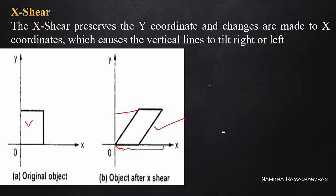So here we will see: x-dash equals x plus the shear factor along the x-axis into y. That is, x' = x + Shx · y. And y-dash is equal to y — y does not change. Shx is the shear factor along the x-axis into y. Y is the factor used to produce the change in x.